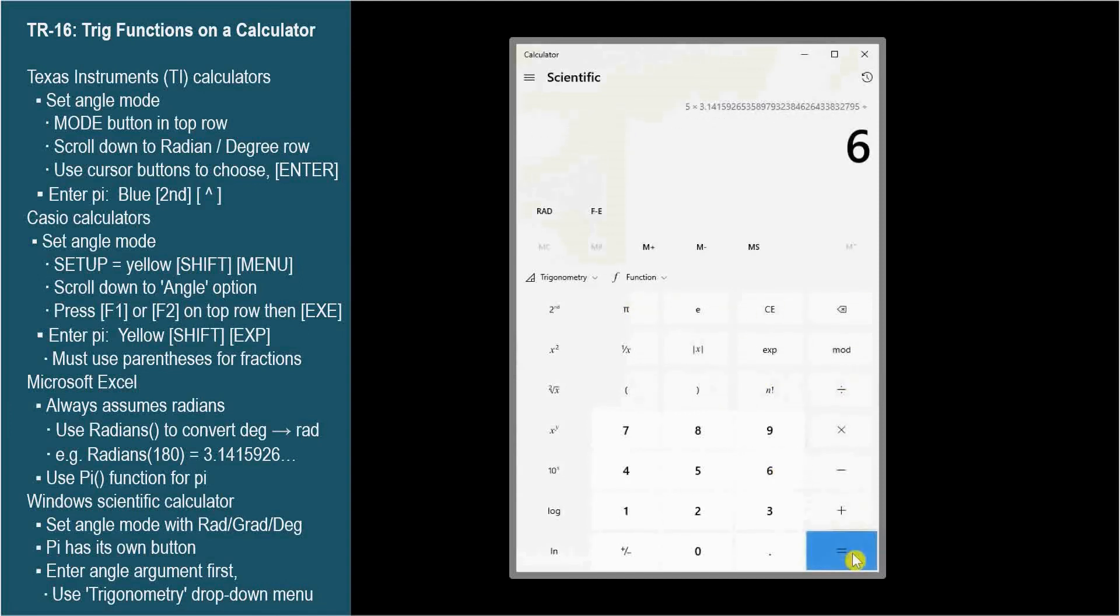Now we need to press the equal sign to evaluate this expression. About 2.618, which is 5 times pi divided by 6. Now click cosine from the trig dropdown. Negative 0.866, the answer we expected.